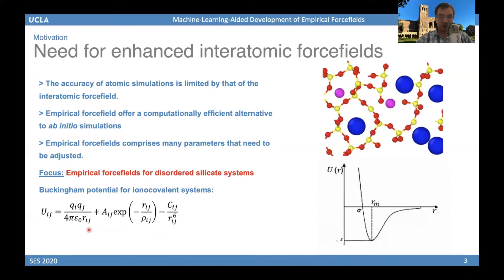The challenge is finding the optimal values for those parameters — such as the partial charge of the atoms, the pre-exponential terms, the parameter rho, and the parameter C. Their values are critical to ensure simulation accuracy, and those parameters need to be adjusted for every pair of elements, giving us many parameters to optimize in order to maximize the accuracy of the molecular dynamics simulation.